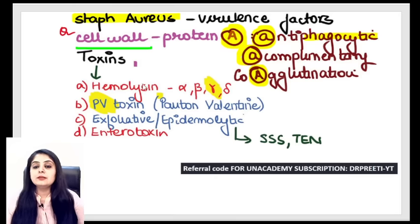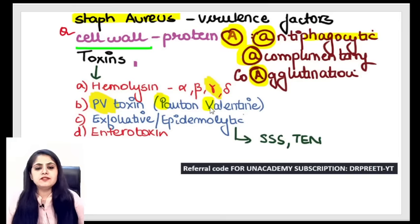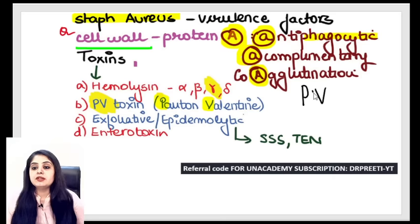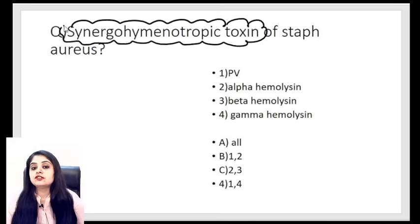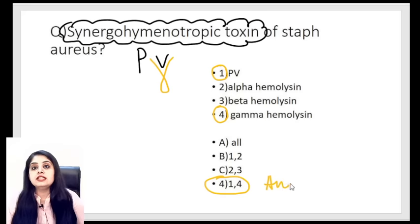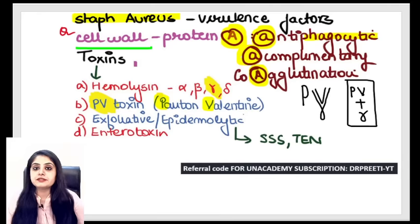Other than that, there are toxins — hemolysins — which break blood: alpha, beta, gamma, and delta hemolysins are present. There is also the PV toxin — PV stands for Panton-Valentine toxin. Remember the way you write gamma looks like a V, so the PV toxin and gamma hemolysin work together as a unit. They are together known as the synergohymenotropic toxin of Staph aureus. The correct answer was option D: PV toxin and gamma hemolysin together.